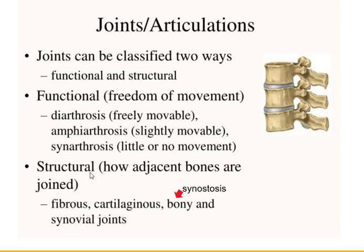Or you can talk about how joints are structurally made — are they held together by fibrous connective tissue, cartilaginous connective tissue, or is it bone fused to bone? The word for that structural no-movement joint is synostosis, and I put it here because it looks a little like synarthrosis. Both synarthrosis and synostosis have no movement. Synovial joints are your diarthroses — those are the freely movable ones.